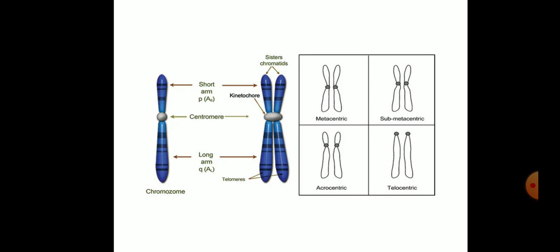In metacentric, the centromere is located exactly at the center. In submetacentric, the centromere is located slightly away from the center towards the short arm. In acrocentric, the centromere is located at the center towards the short arm. While in the telocentric, the centromere is located at the tip while specifying no arms.